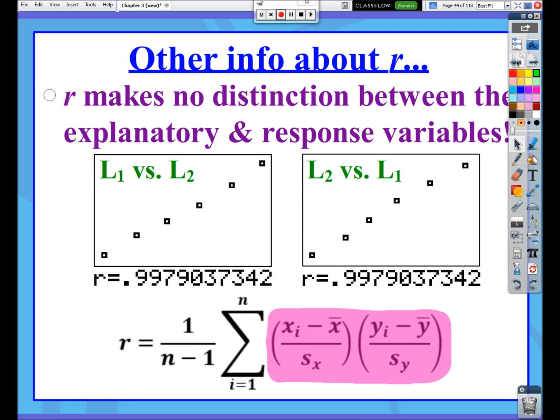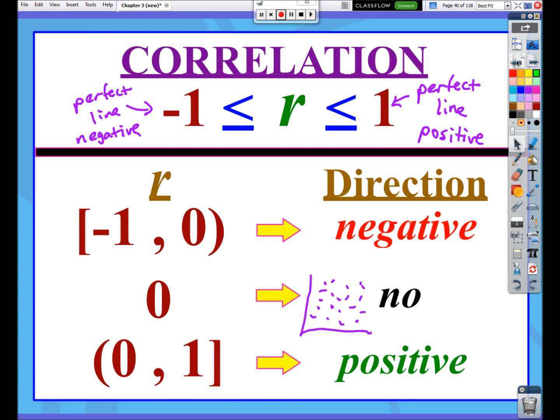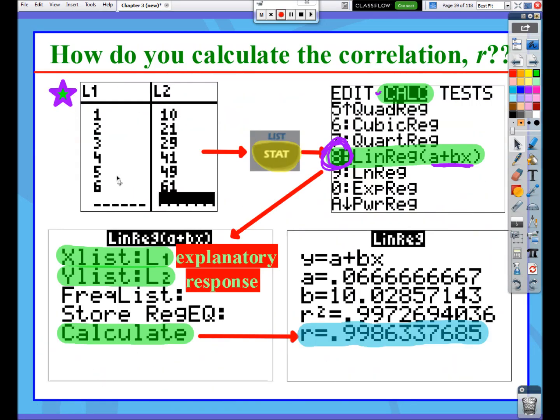So what I mean by that is if I went back here to this data set, and we said this data set had a very strong correlation. Well, if, for instance, if I could come up with an explanatory variable data point of 4.5, that's something I don't have a data value for, right? I don't know what its y value would be for 4.5.